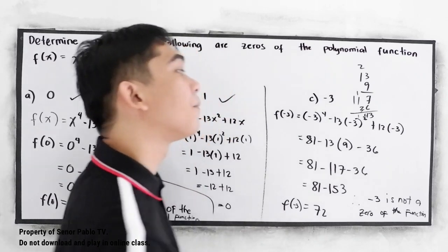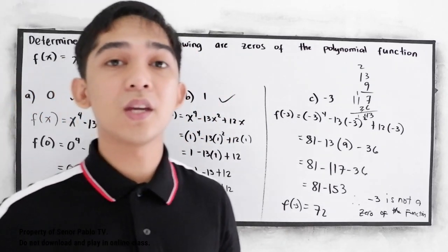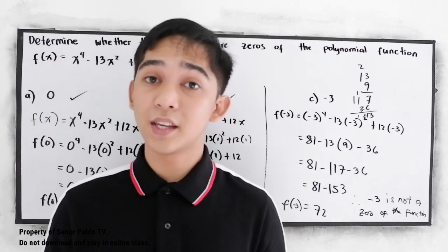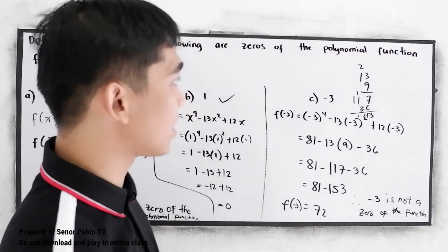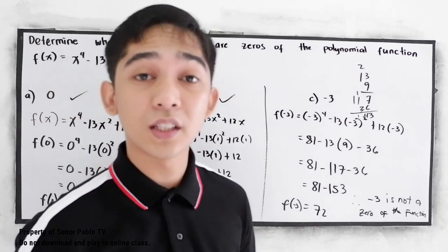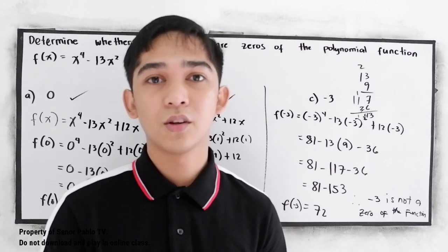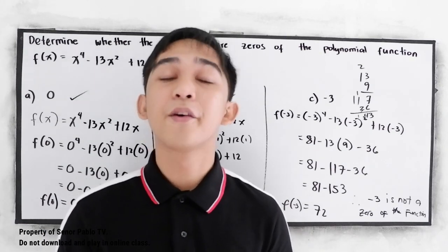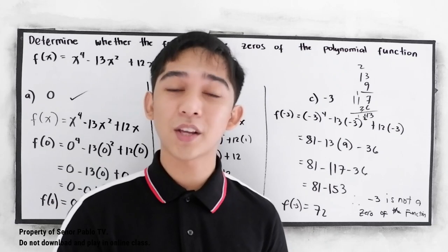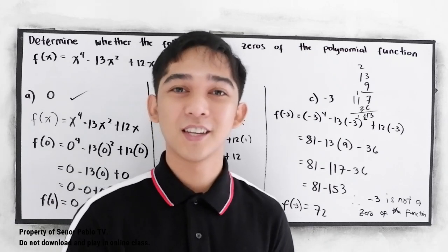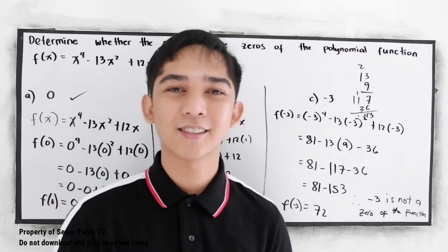That's how to determine whether a given value is a zero of a polynomial function — just substitute into our given function. Thank you for watching Senior Pablo TV, see you in our next lesson.